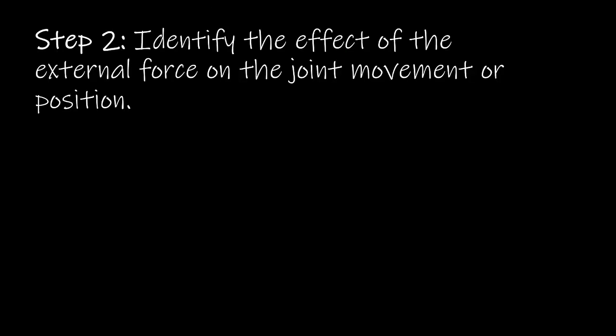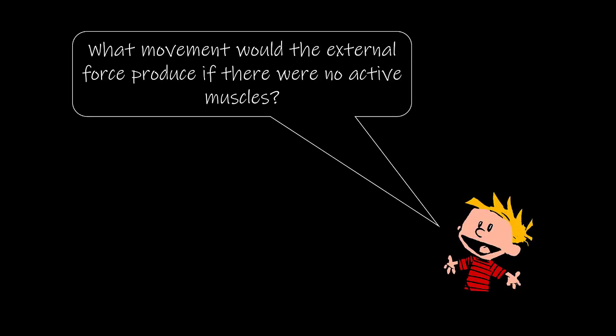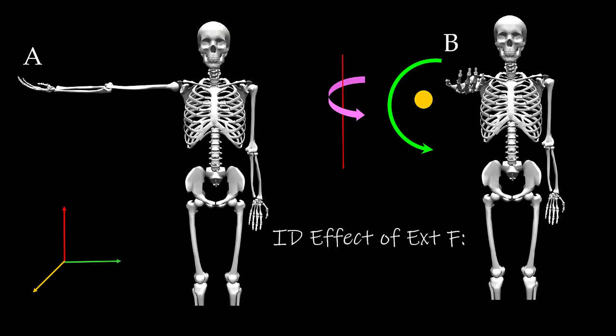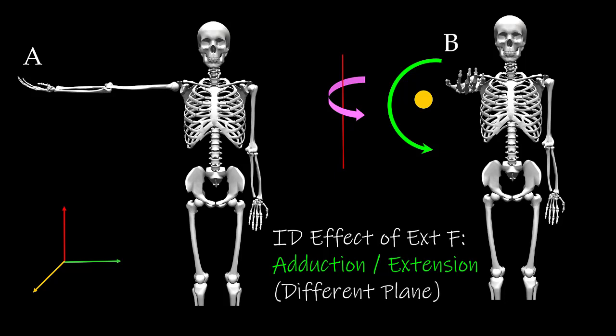Step 2 is to identify the effect of the external force on the joint movement or position — in other words, what movement would the external force produce if there were no active muscles? In this particular case, we can see the effect of the external force or gravity would be to rotate the arm downward. So if we identify the effect of the external force, it could be adduction or extension, depending on the arm position, the point being that it's occurring in a different plane.